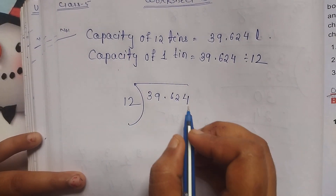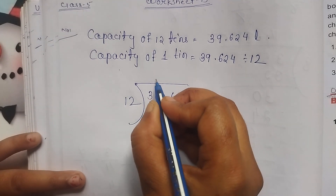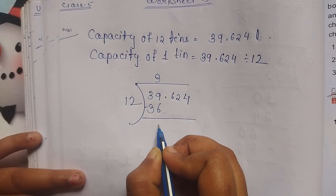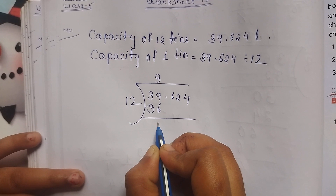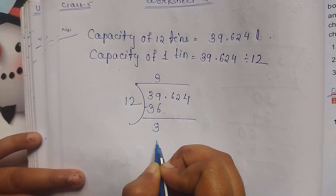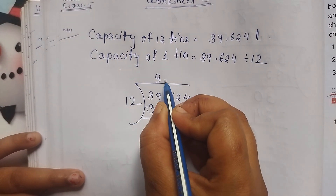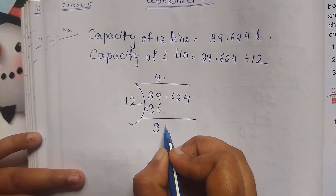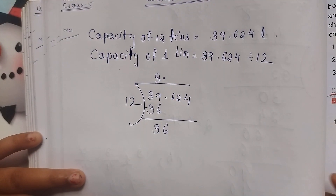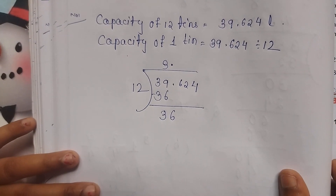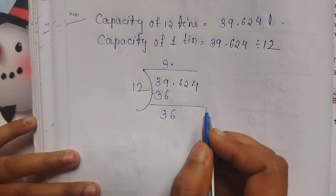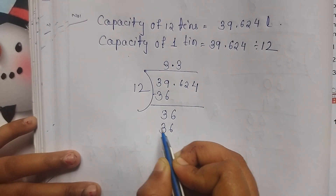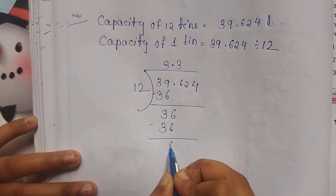12 goes into 39: 3 times 12 is 36. Then 39 minus 36 equals 3. 3 is less than 12, so we put a decimal point and bring 6 down. Now the number is 36. Then 12 times 3 is 36, and 36 minus 36 is 0.